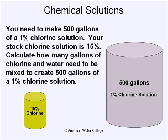The problem reads: you need to make 500 gallons of a 1% chlorine solution. Your stock chlorine solution is 15%. Calculate how many gallons of chlorine and water need to be mixed to create 500 gallons of a 1% chlorine solution.